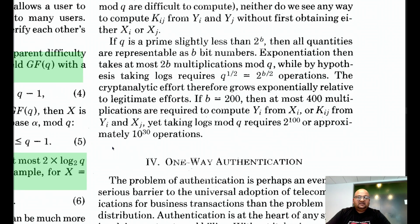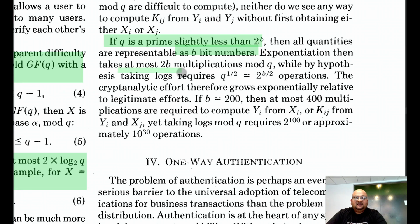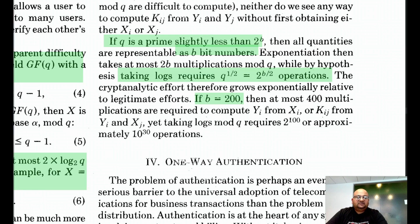Let's look at the security of this. If q is a prime number that can be represented in b bits, then taking logs requires on the order of 2 raised to the b/2 operations. So if we pick a prime number that takes 200 bits to represent, computing logs modulo q would take about 2 to the power of 100 operations, which is computationally infeasible.